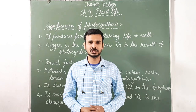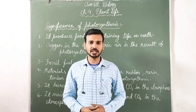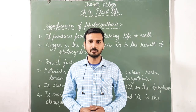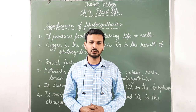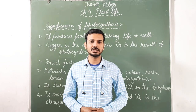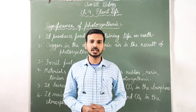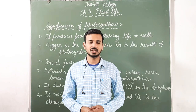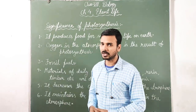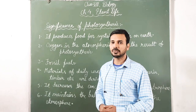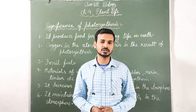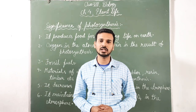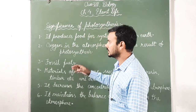Hello students, welcome to the biology class for Class 7. We are learning Chapter 4, Plant Life. In our previous video, we discussed the factors that affect the rate of photosynthesis, categorized into internal factors and external factors. In this video, we are going to discuss the significance of photosynthesis — a very important and essential process to sustain life on earth.